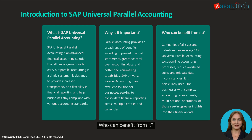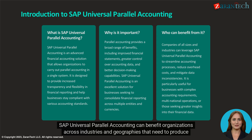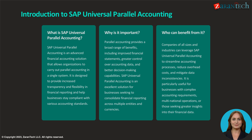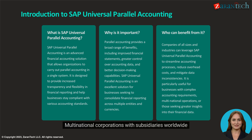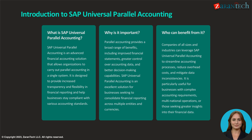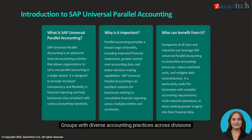Who can benefit from it? SAP Universal Parallel Accounting can benefit organizations across industries and geographies that need to produce consolidated financial statements in multiple GAAP or currencies. Key examples include multinational corporations with subsidiaries worldwide, companies with multiple reporting requirements, organizations undergoing mergers, acquisitions, or carve-outs, groups with diverse accounting practices across divisions, and businesses seeking a single source of truth for financial data.